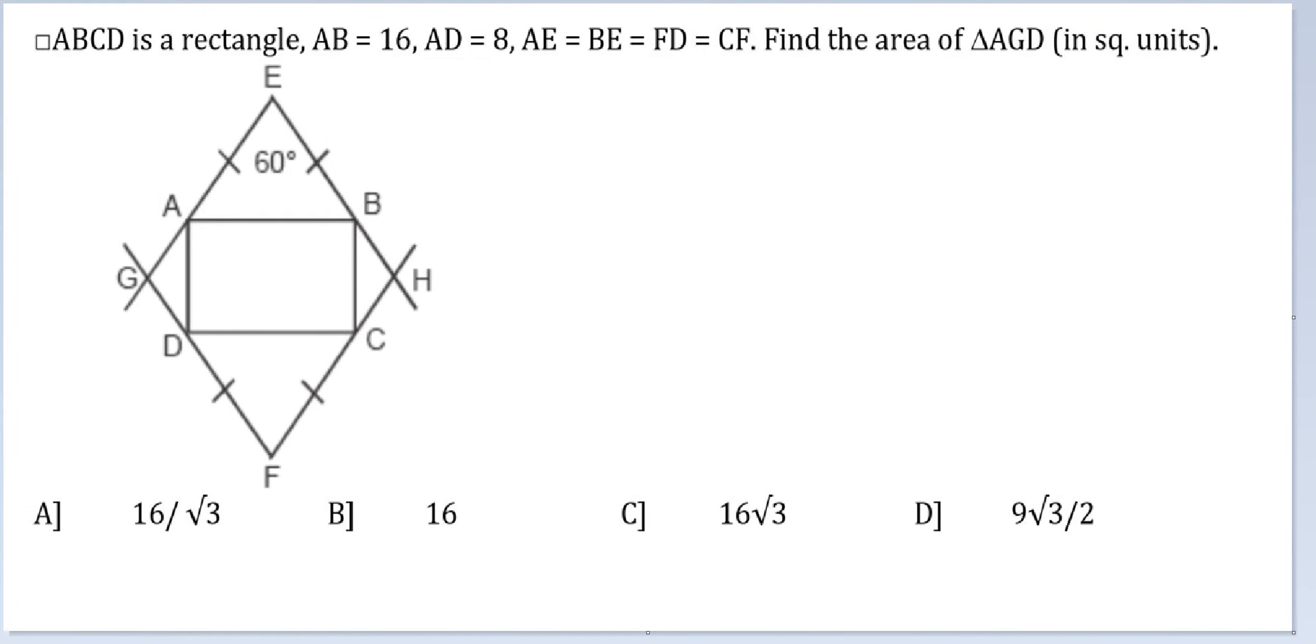Let's look at this question now. Quadrilateral ABCD is a rectangle. AB is equal to 16 and AD is equal to 8. This is 16, this is 8.